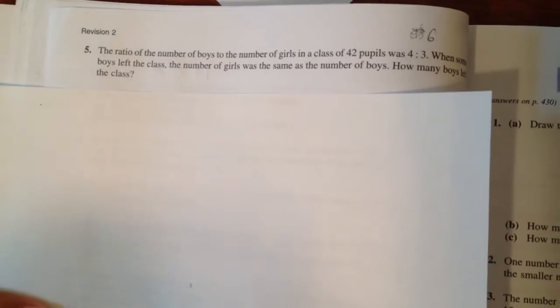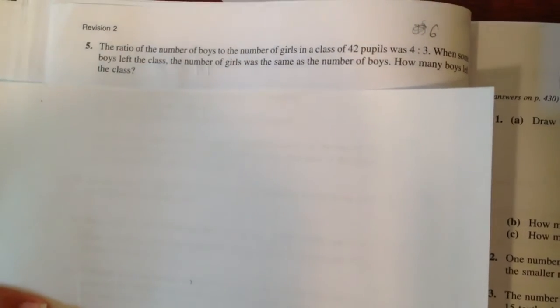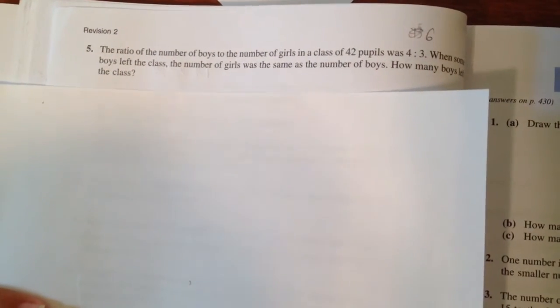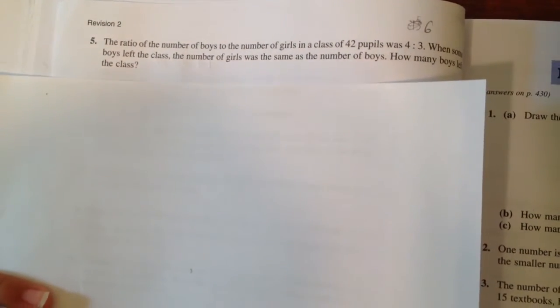Problem 5: The ratio of the number of boys to the number of girls in a class of 42 pupils was 4 to 3.